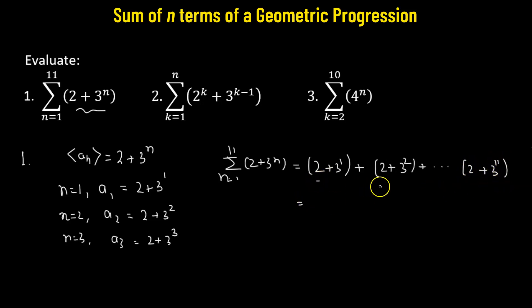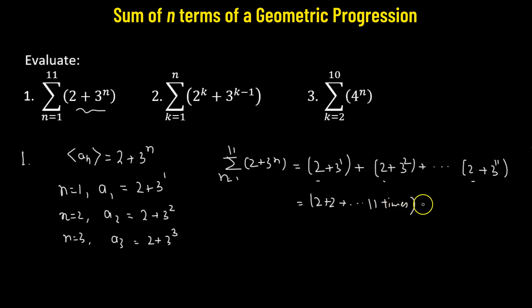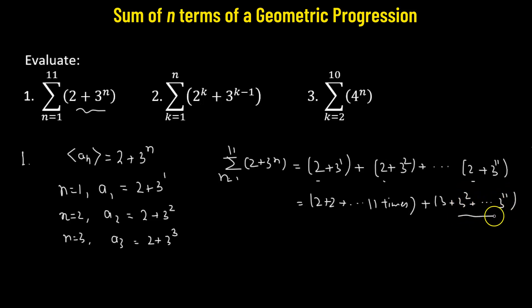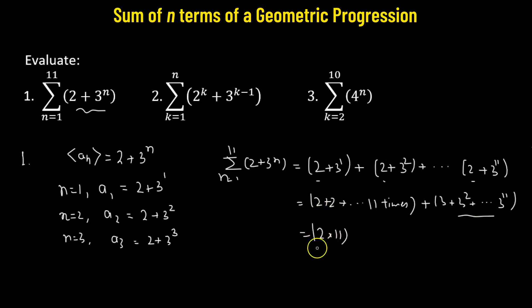We combine the constant parts of each term. So we have 2 plus 2, added to itself 11 times. Then we have 3 plus 3 squared plus 3 cubed, all the way up to 3 to the power of 11. This accounts for all 11 terms. The 2 added to itself 11 times gives simply 2 times 11.